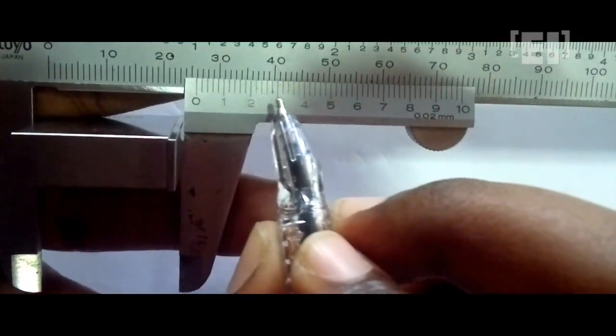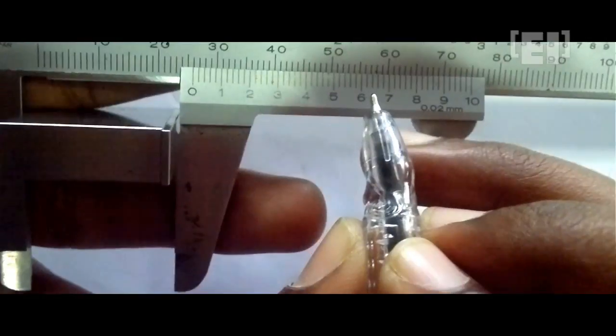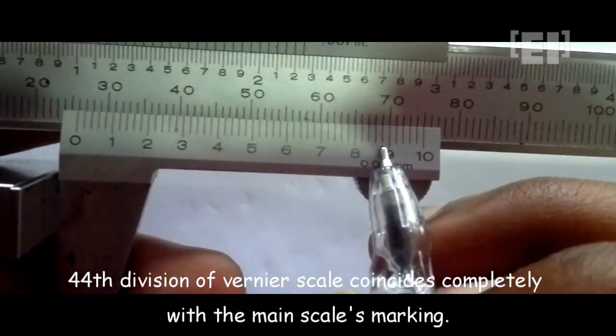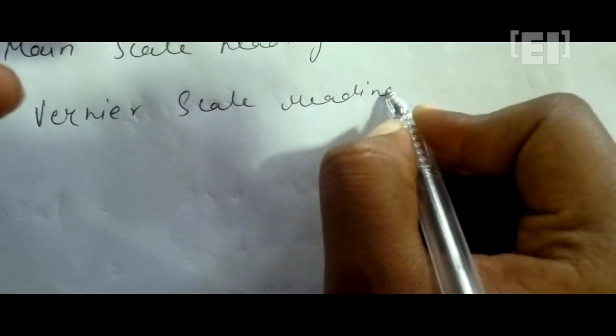Now we'll check which division of the vernier scale coincides with the division of the main scale completely. It can be any division, so check carefully. This will be the vernier scale's reading.